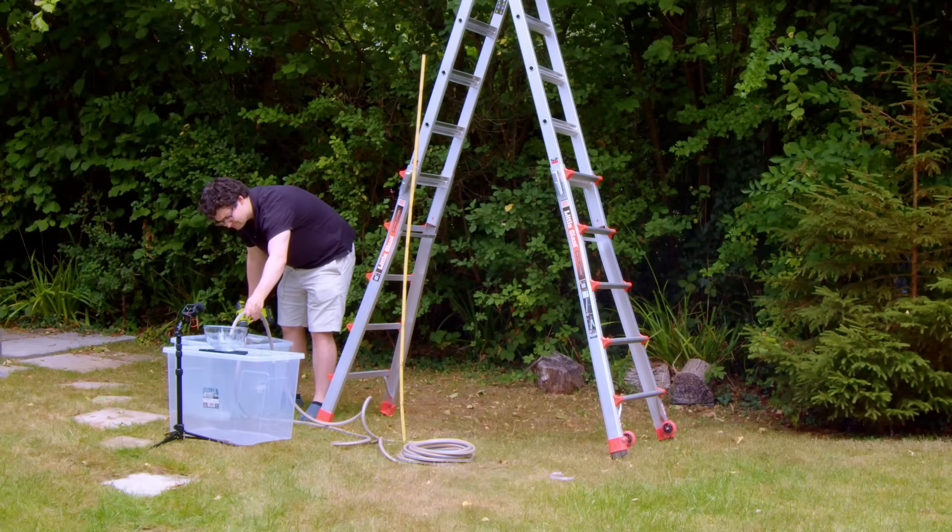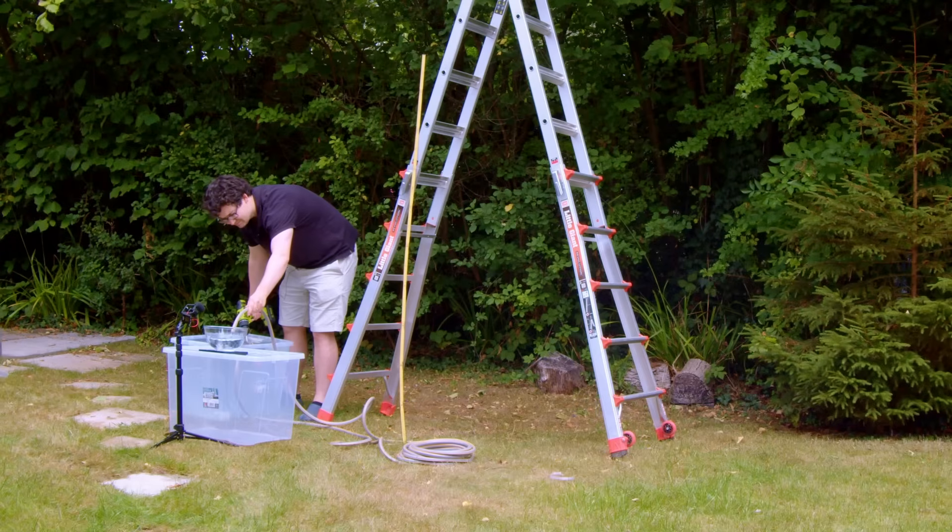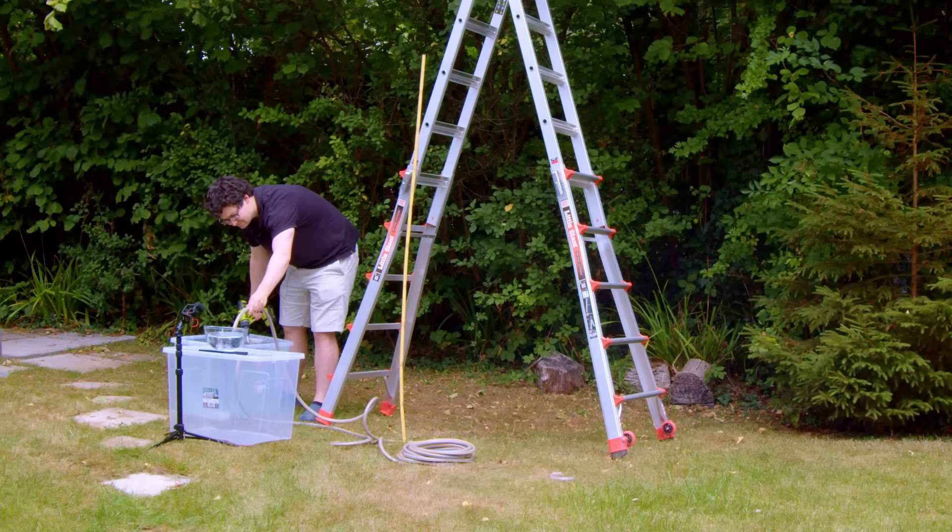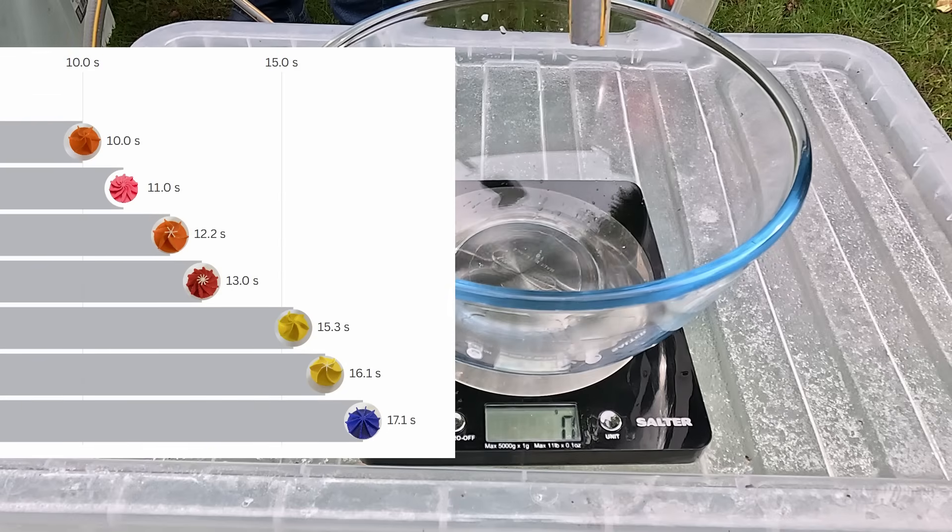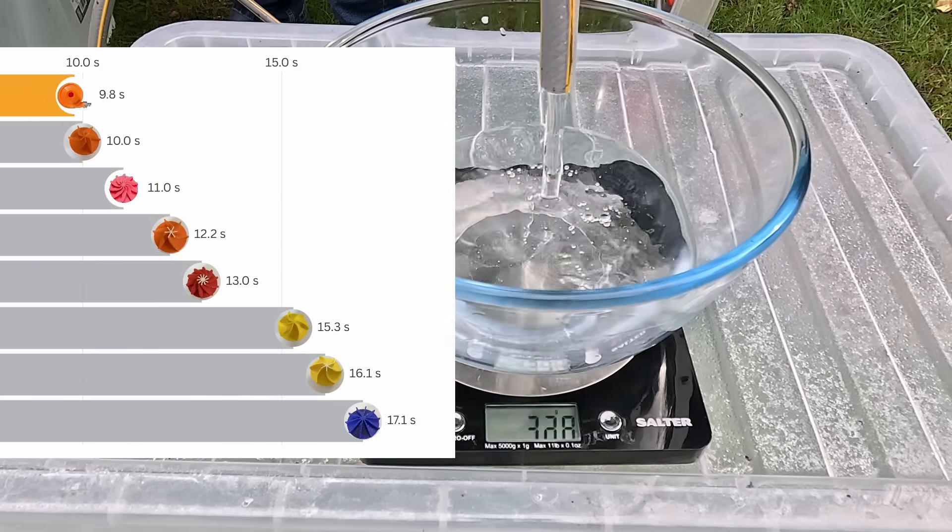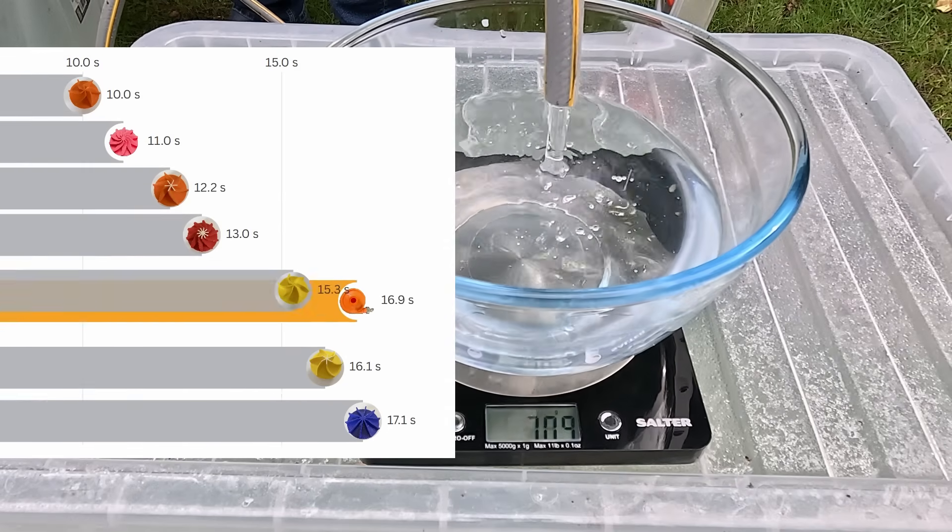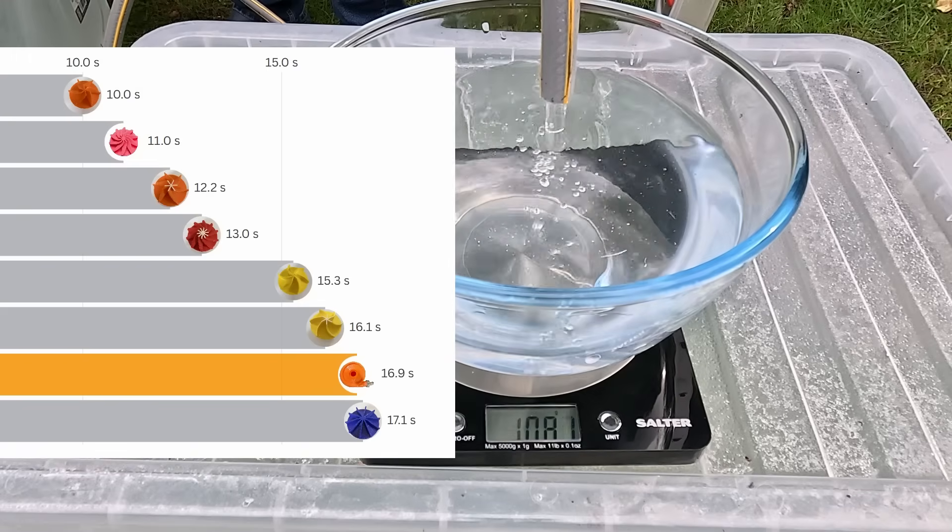The first test is the zero meter head pumping rate, so see how long it takes to pump a liter of water into this bowl when the inlet and outlet at the same height. Okay, here we go. Okay, so it's slower at pumping the liter than the equivalent red impeller. Oh, it's slipping quite far down the table. Okay, 16.9 seconds.